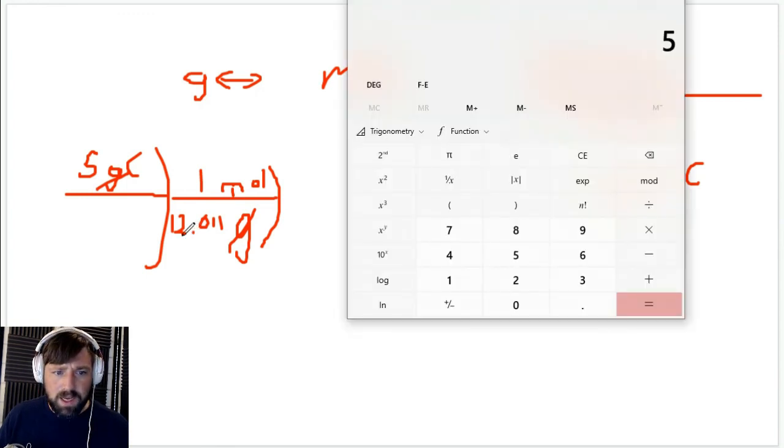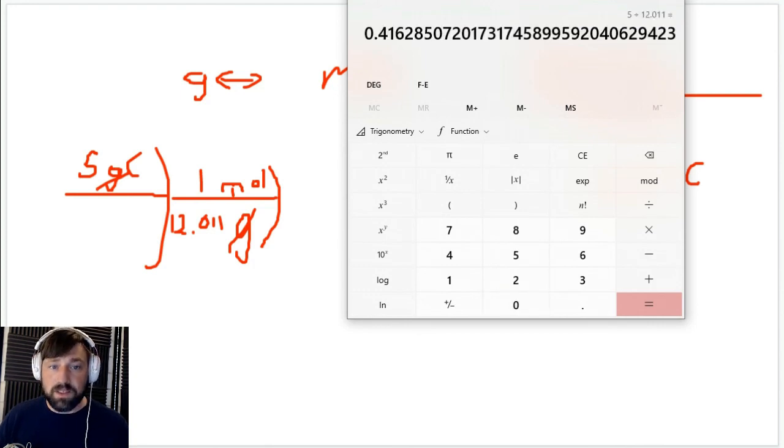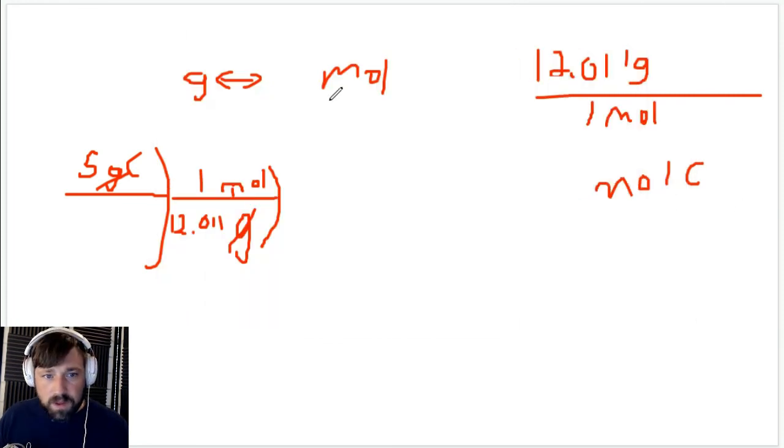Now we can just go through and plug and chug. 5 divided by 12.011. And there's our answer. 0.4 moles of carbon. So that's how you go from grams to moles.